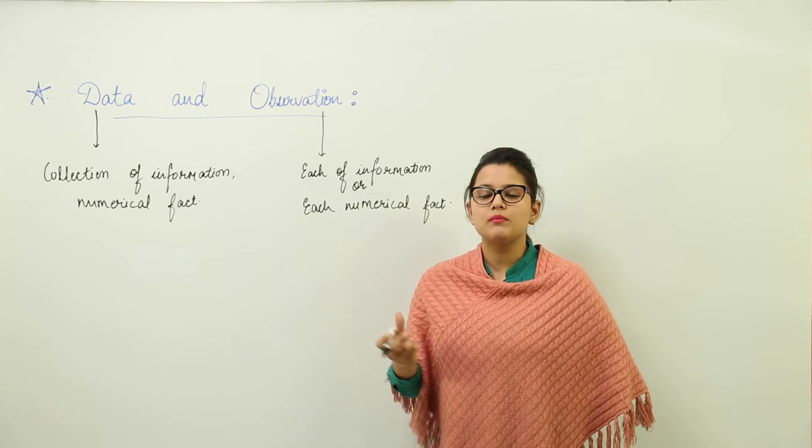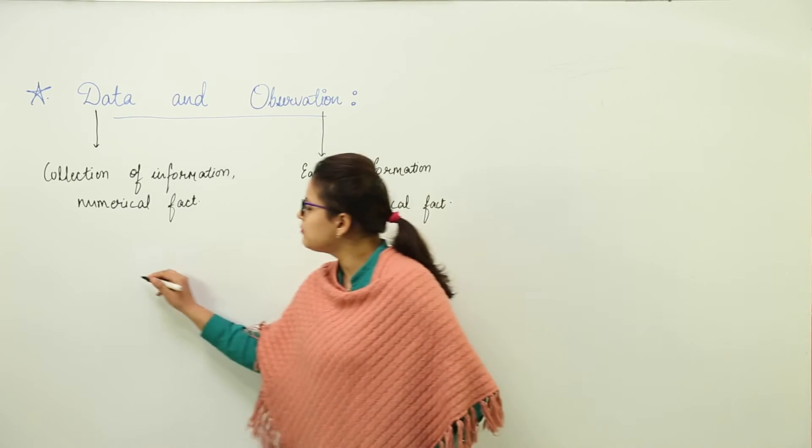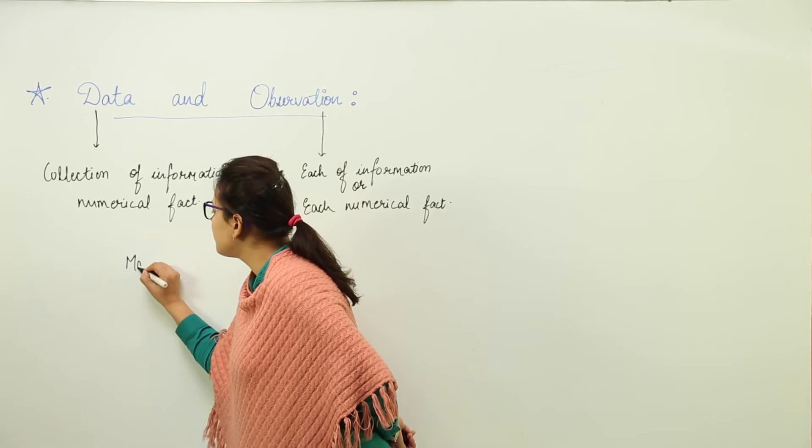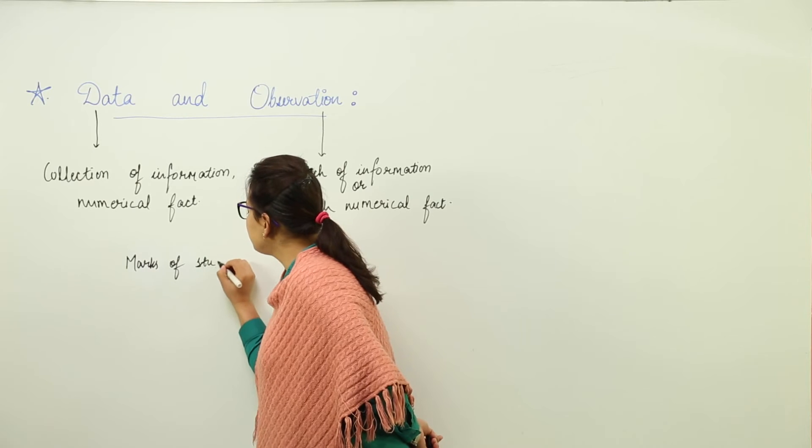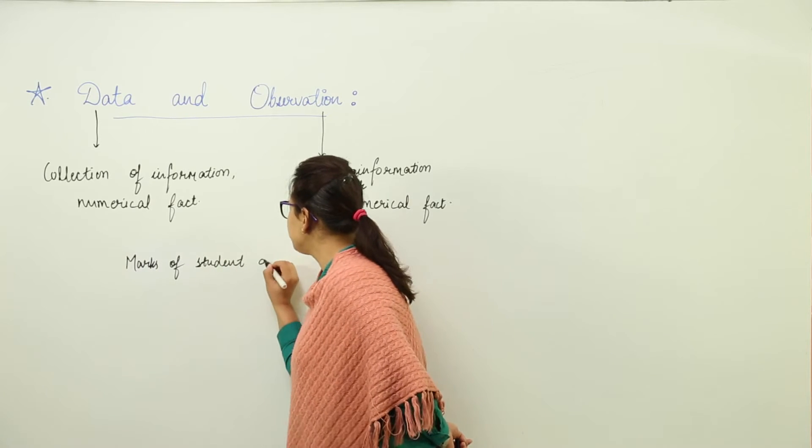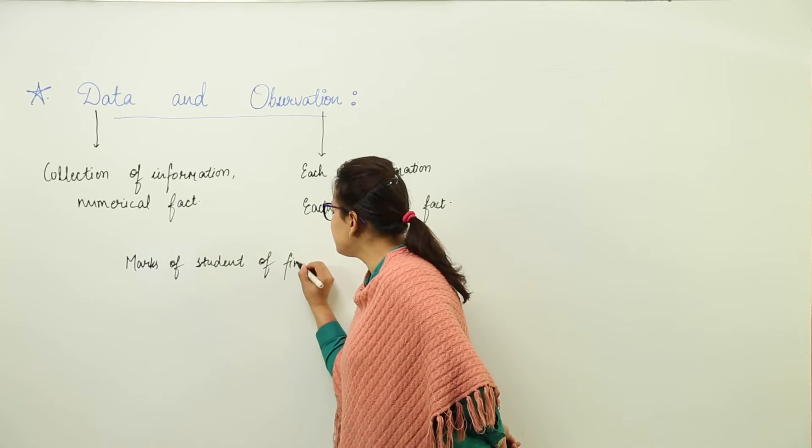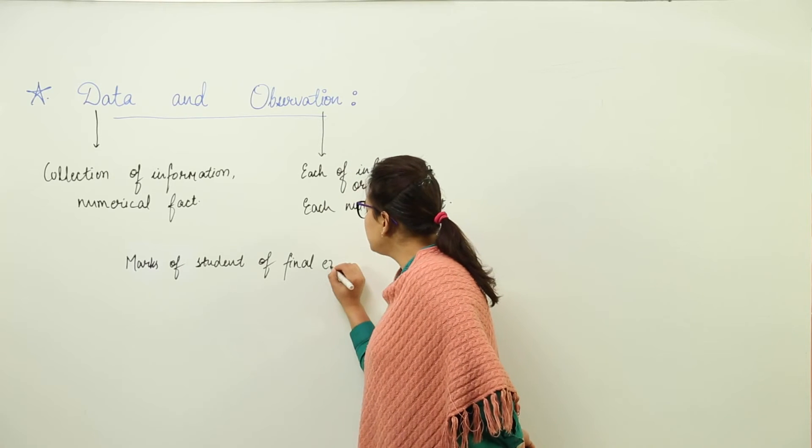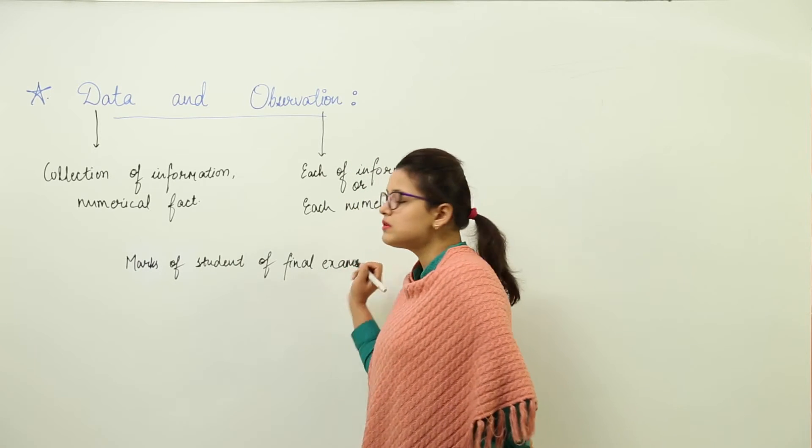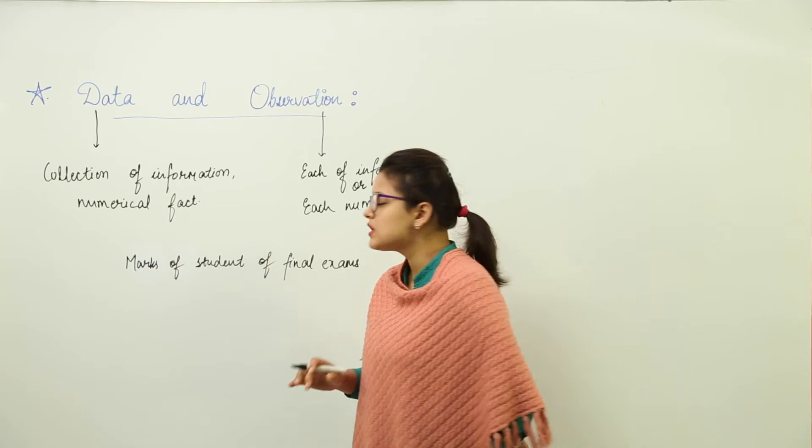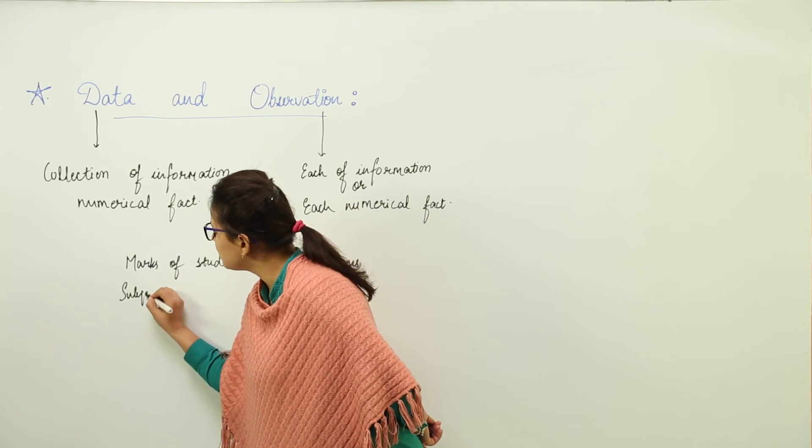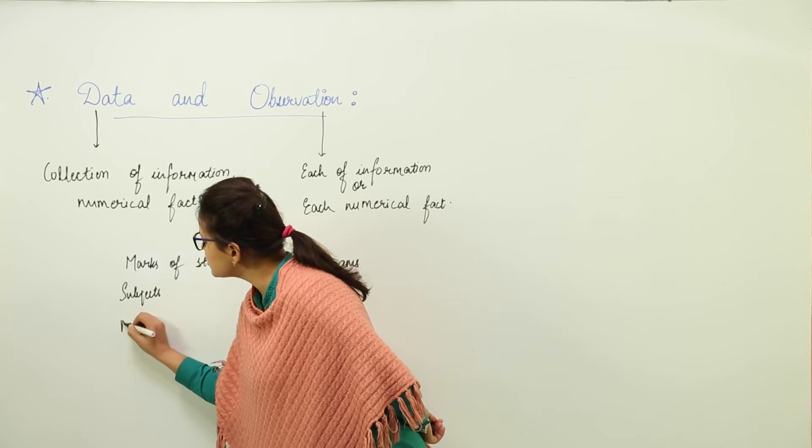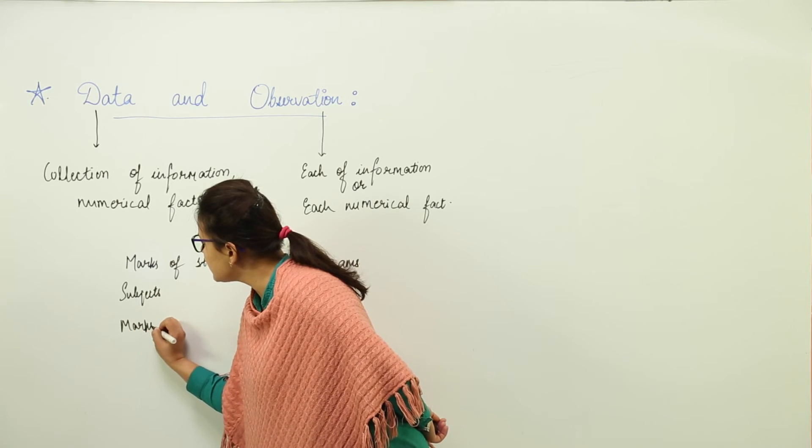Now, can we take some example for this? Yes, we can. Let us take the example of marks. Say I am writing marks of a student in final exams. This is the data that I have collected. The marks will be scored in five subjects, so I am writing subjects in the first column and marks in the second one.